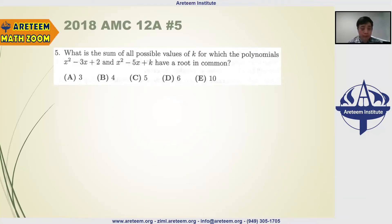Question number five on the 12A. So we want to find out two polynomials. These two polynomials have a root in common. We want to find the value of k for that to happen and add up all the possible values of k.